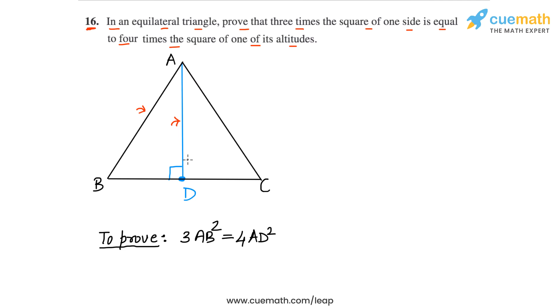Because triangle ABC is an equilateral triangle, the altitude AD will bisect the side BC. And this means that BD will be half of BC. So we'll make use of this thing in our proof BD will be half of BC.